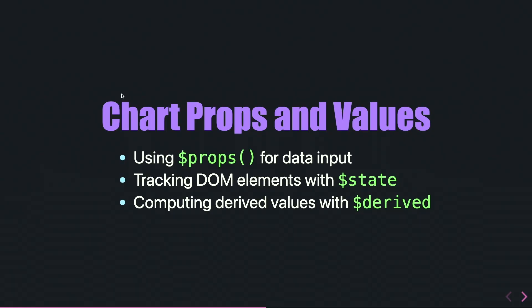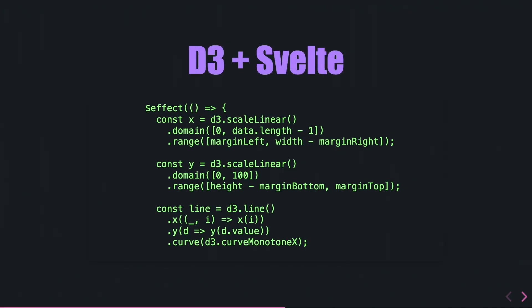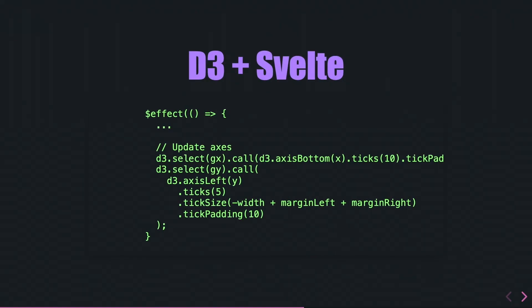To summarize: I'm using props for data input, tracking DOM elements with state, and computing derived values with derived. Now let's focus on the integration of the two tools — Svelte and D3. I use effect — this is the whole heart and foundation of how it actually generates things. Here I start using the D3 API. Const x and const y are responsible for the axes, and the line focuses on the line for the chart. This is all we need to make a very simple basic foundation, and with the effect power, this update triggers every single time something updates from the data perspective.